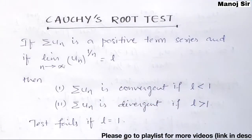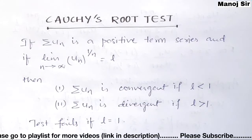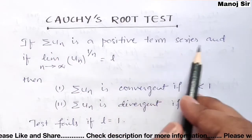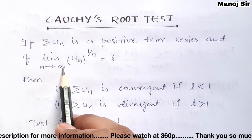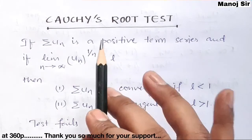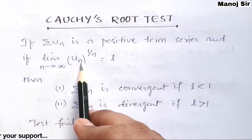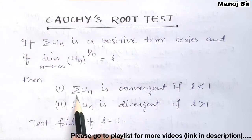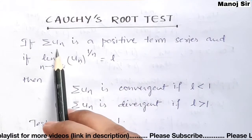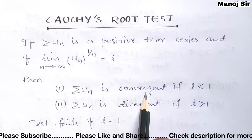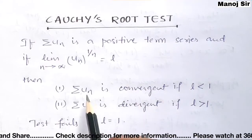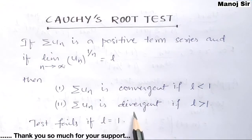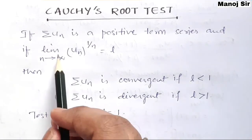Let us start. What is Cauchy's Root test? If summation u_n is a positive term series, and the limit as n tends to infinity of u_n^(1/n) equals L, then the series summation u_n is convergent if L is less than one, and divergent if L is more than one.